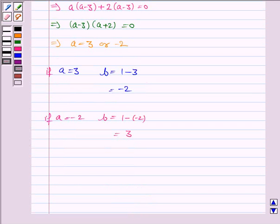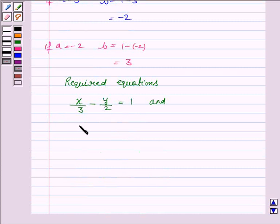So we have obtained the intercepts as 3 minus 2 and minus 2, 3. So the required equations are x upon 3 minus y upon 2 is equal to 1 and x upon minus 2 plus y upon 3 is equal to 1.